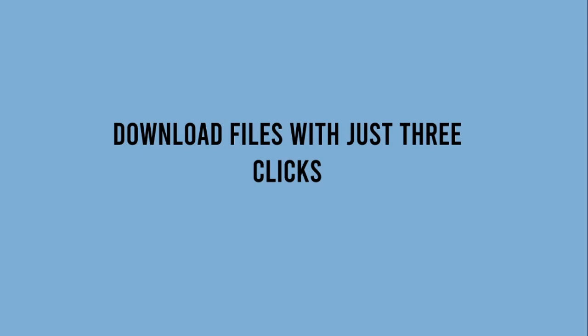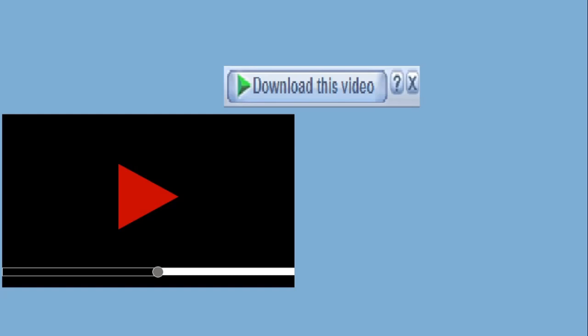Next, download videos in just three clicks. You can easily download a video with a click. When opening a tab, notice that there is a pop-up in the upper right corner of the video that says 'Download this video.' You can click it, and then a drop-down will be shown where you can select the file type and the quality of the video.